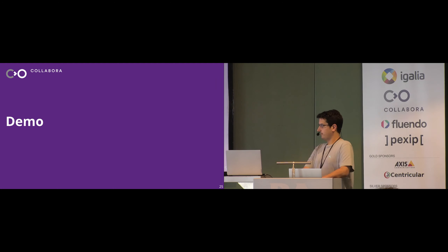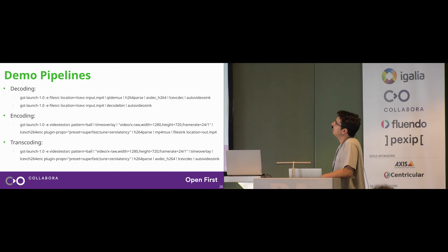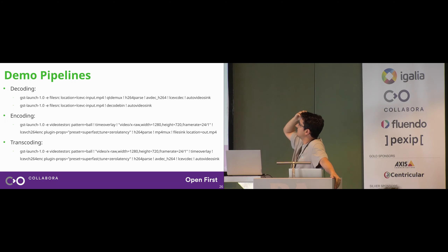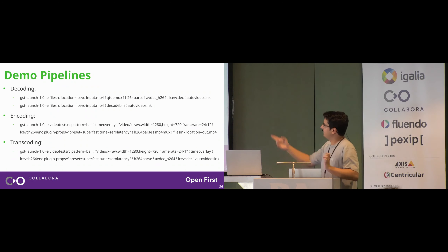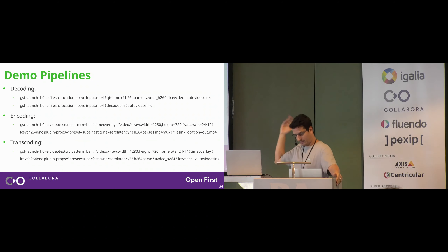Now I'm going to do a demonstration. I'm going to run these pipelines. I have two decoding pipelines: one that doesn't use decode bin for auto-plugging and one that uses decode bin for auto-plugging. Then I have an encoding pipeline that encodes raw video buffers, and a transcoding pipeline that encodes video, decodes it, and shows it on screen.